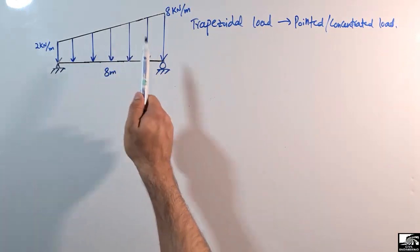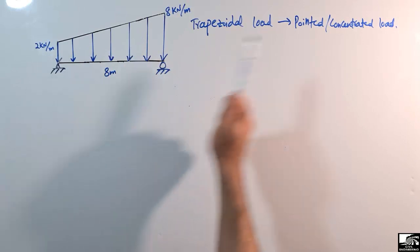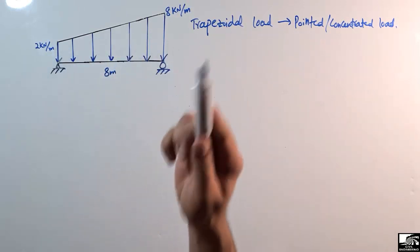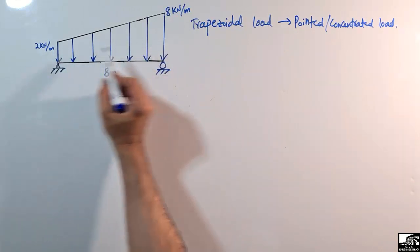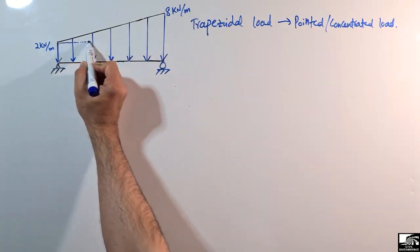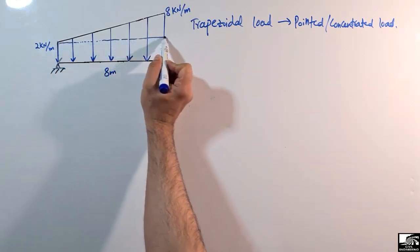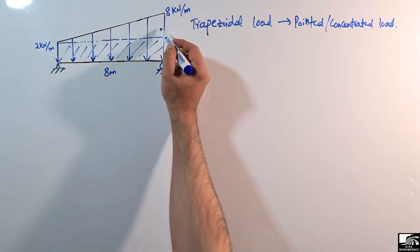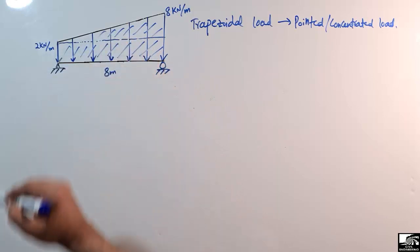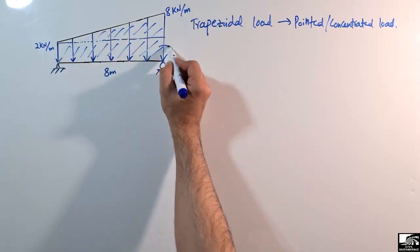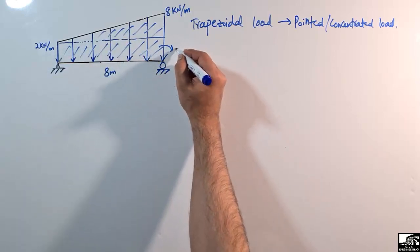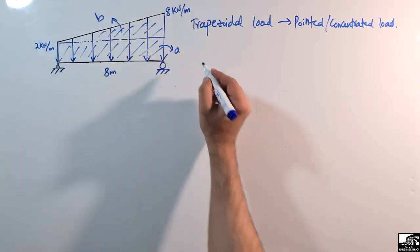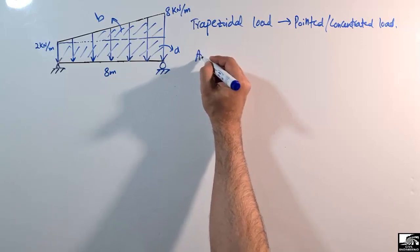The simple way to convert a trapezoidal or uniformly varying load into a pointed load is to first divide the trapezoidal load into two parts: a rectangular part and a triangular part. We call the rectangular part 'Part A' and the triangular part 'Part B'.